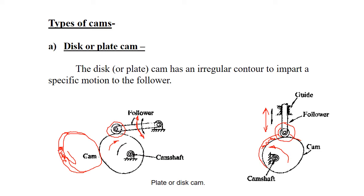In the second figure, the cam rotates in an anticlockwise direction. By this rotation, the roller of the follower rolls on the surface of the cam, and the follower moves up or down. During one complete cycle of cam rotation, the follower produces translatory motion — up and down. In this way, the disc type cam is used to obtain either oscillatory or translatory motion as per the application.